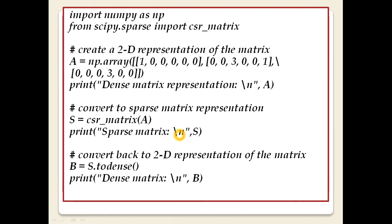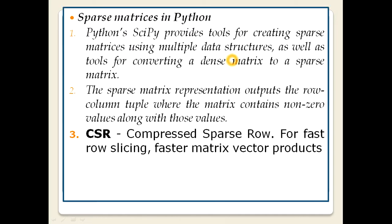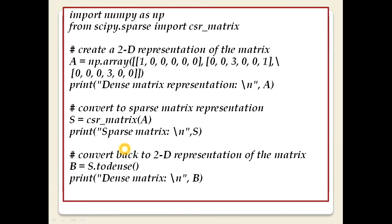Now let's come to the coding part. We import numpy as np, since array-based calculations are done with numpy. Then from scipy.sparse we import CSR matrix — that is Compressed Sparse Row, for fast row slicing. These two imports, numpy and scipy, are very important.